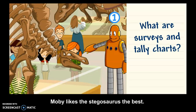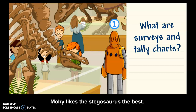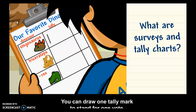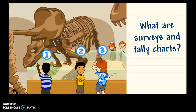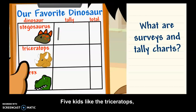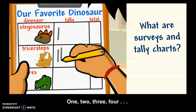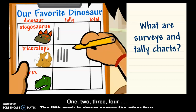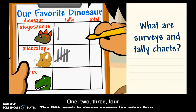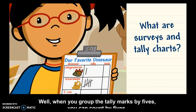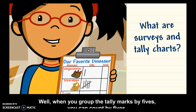Moby likes the stegosaurus the best. You can draw one tally mark to stand for one vote. Five kids like the triceratops, so I'll draw five tally marks in that row. The fifth mark is drawn across the other four. When you group the tally marks by fives, you can count by fives.